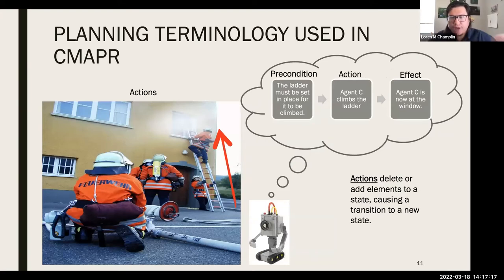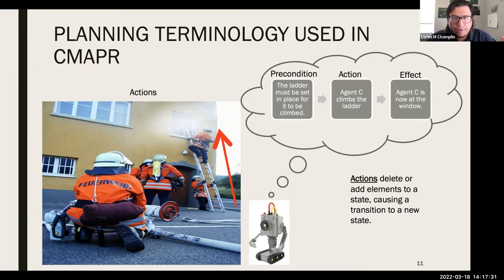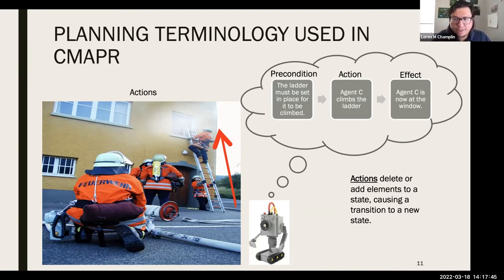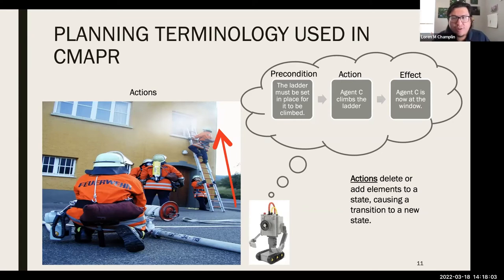Actions delete or add elements to a state, causing a transition to a new state. For example, if Agent C climbs the ladder, the previous state might have Agent C at the bottom of the ladder. They perform the action 'climb ladder,' and now in the new state they're at the window — the action has transitioned the state. Actions typically have preconditions: things that must be true in the state for the action to be executed. For Agent C to climb the ladder, the ladder must be set in place.